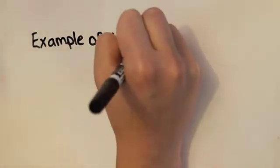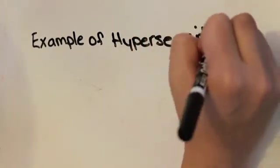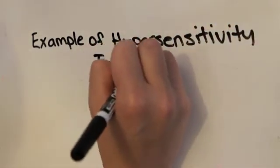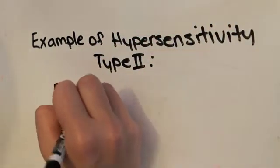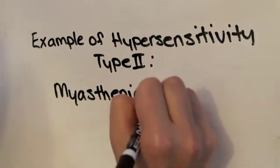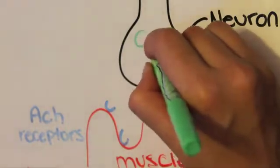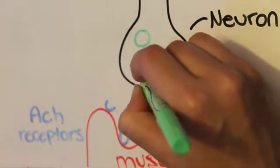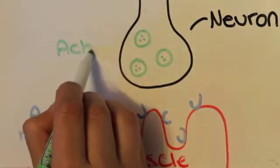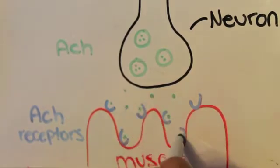Myasthenia gravis or MG is an example of a type 2 hypersensitivity disorder. In this disorder, there are autoantibodies created which specifically denature or block the acetylcholine receptors. When a person has MG, the neural axon is still stimulated to release the vesicles containing ACH into the synaptic cleft.